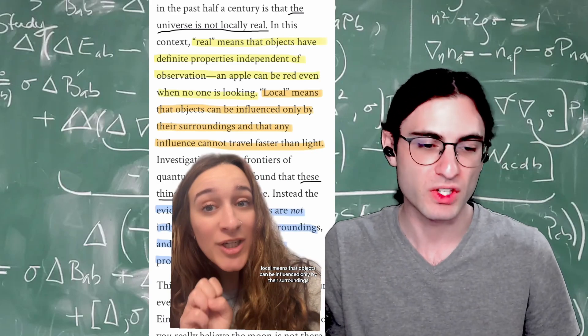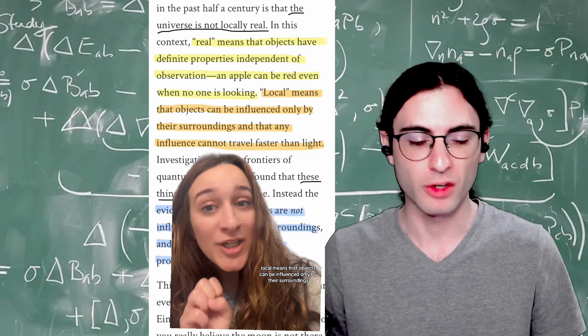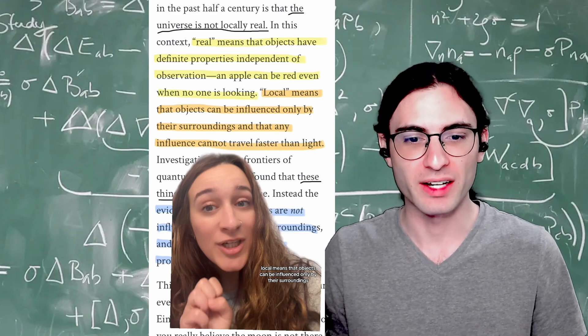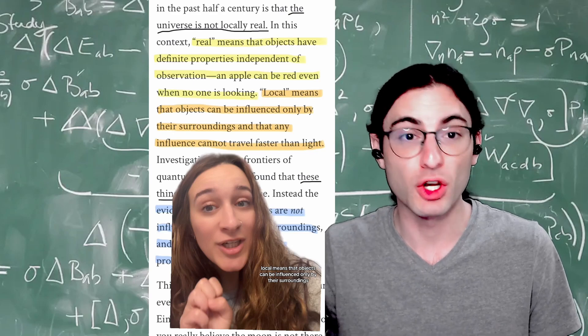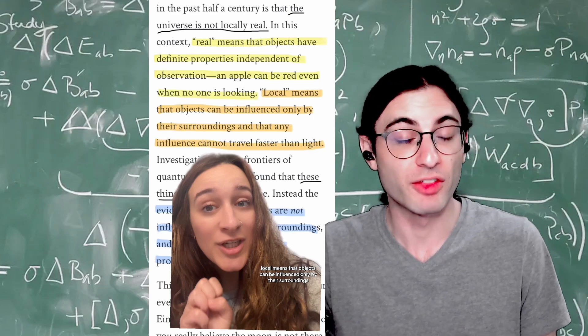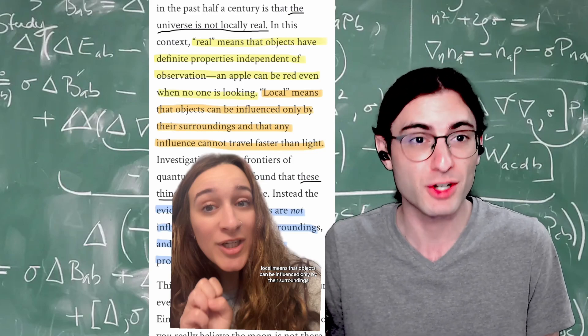Okay, so what they really meant here is nothing to do with observation, but to do with measurement. So what realness is about is that when you measure something, that gives you an outcome, but if you don't measure it, the property of the thing doesn't exist.